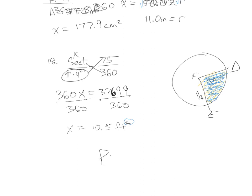Your assignment for section two is on page 606. You are going to do the odds — 3, 5, and 7 — and also 15 and 17. Not a lot of problems for e-learning, which is great. I want to make sure you can do the basics.